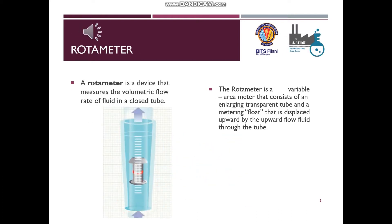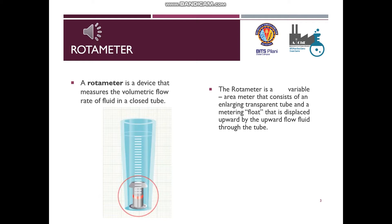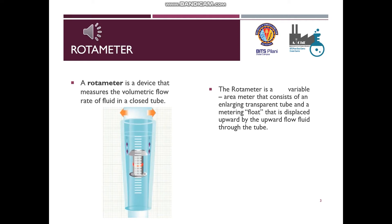Finally, let us study about rotameter. A rotameter is a device that measures the volumetric flow rate of the fluid in a closed tube. It is a variable area meter that consists of an enlarging transparent tube and a metering float that is displaced upward by the upward flow of fluid through the tube.